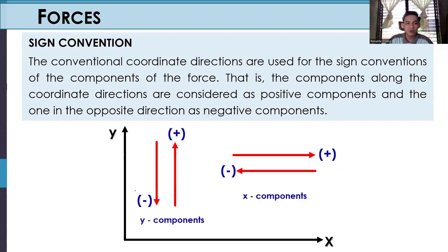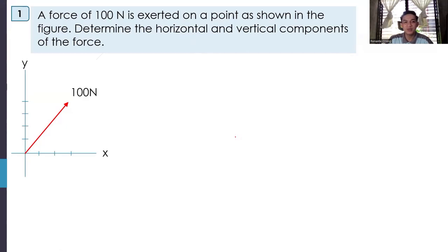For example, you can make one direction positive and the other negative — that is okay, as long as your assumption remains the same throughout your solution. Let us proceed to our examples to better understand the concept. Number one: a force of 100 N is exerted on a point as shown in the figure. Determine the horizontal and vertical components of the force.